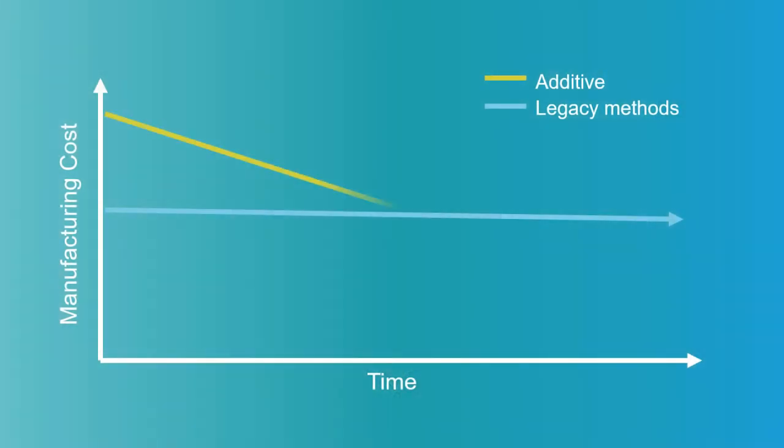Cost is another factor to consider, and it's something that will continue to improve over time. At the current time, for many production applications, the cost of additive is prohibitive compared with legacy manufacturing methods. However, the cost of printing is dropping rapidly, whereas the cost of manufacturing with most legacy methods has already mostly depreciated. So there's a good probability you'll hit that inflection point for your particular situation. We've seen some use cases hit this point much faster than expected, and the cost of additive continually opens up new use cases that were previously cost prohibitive.